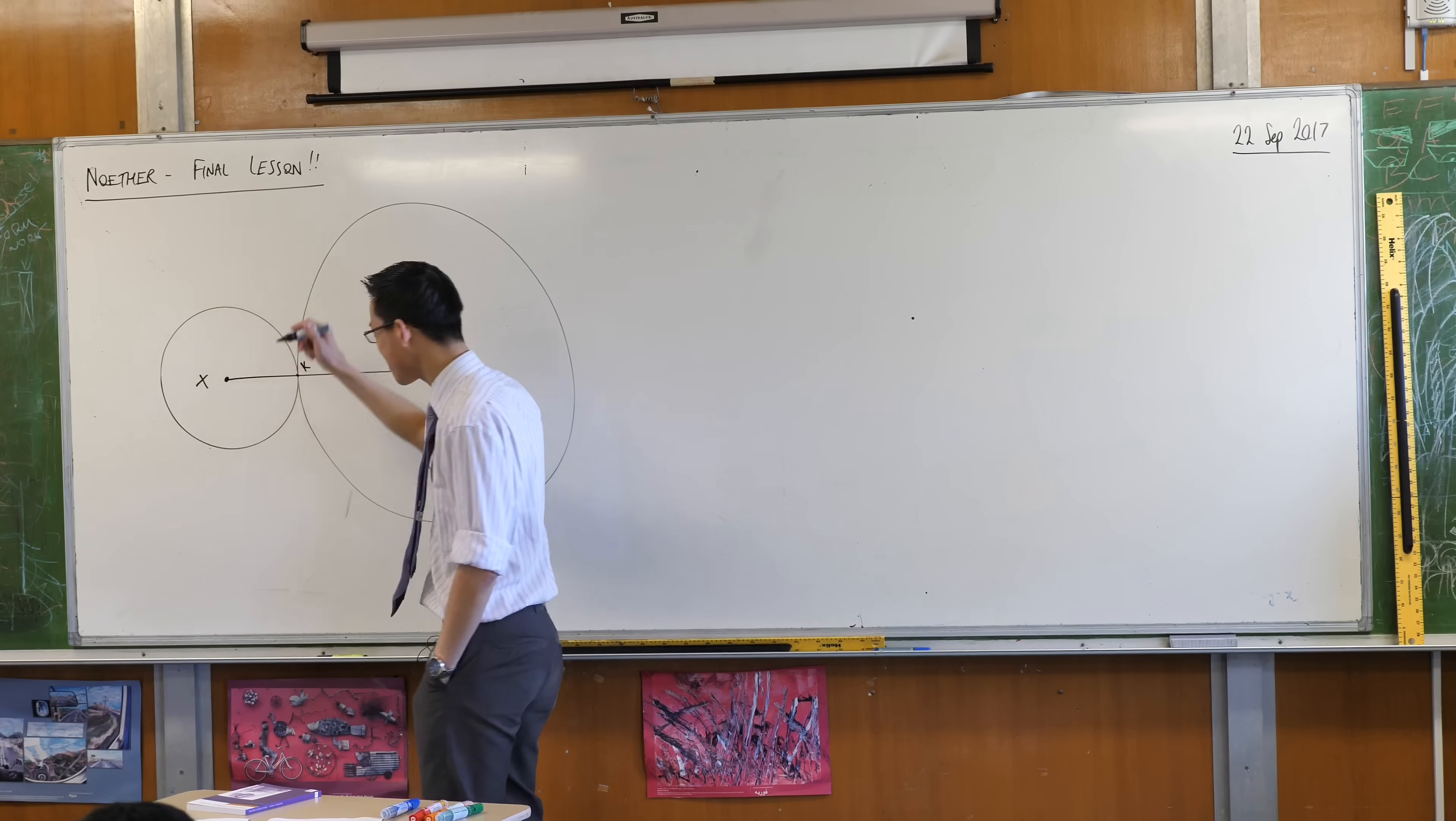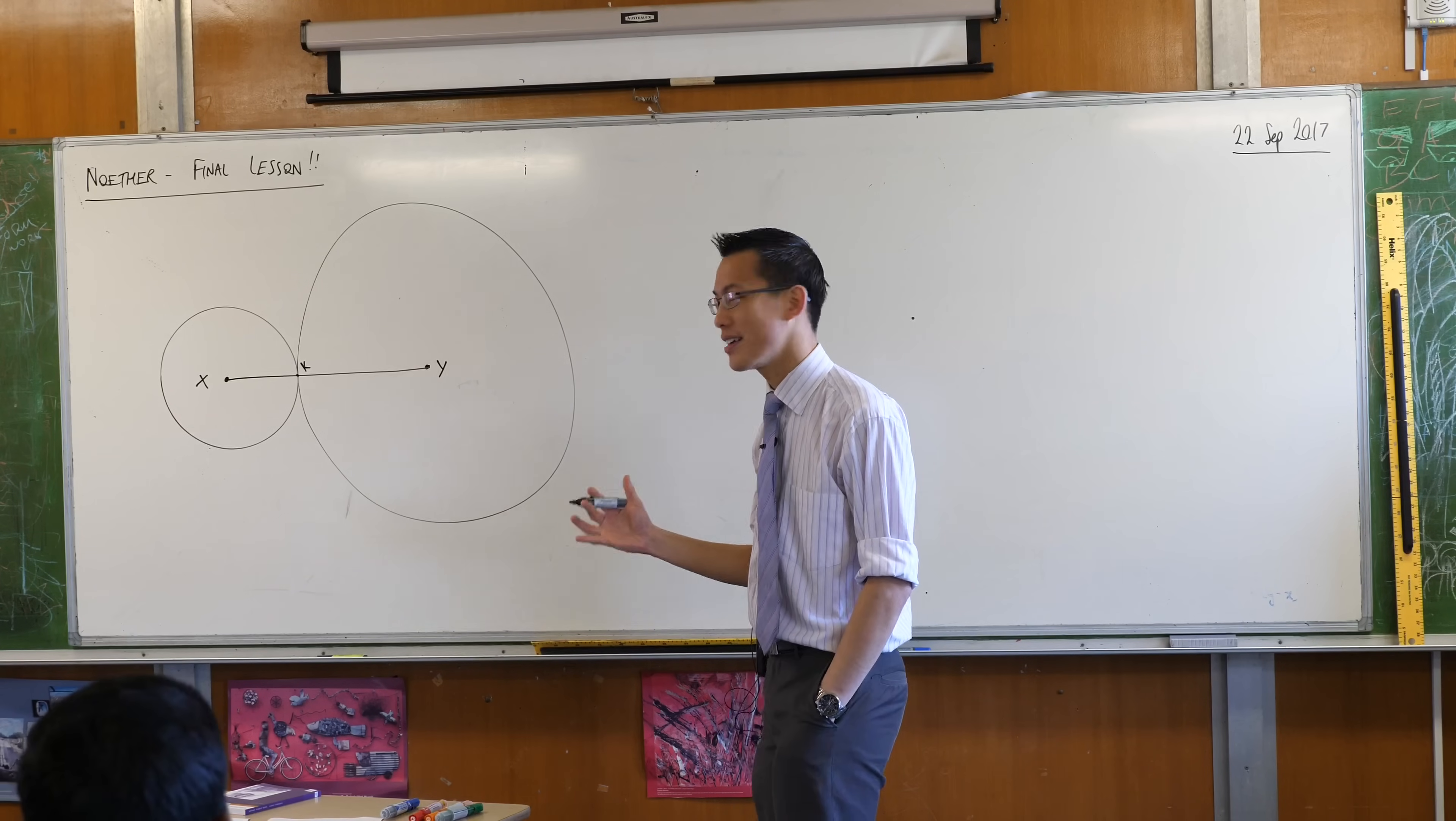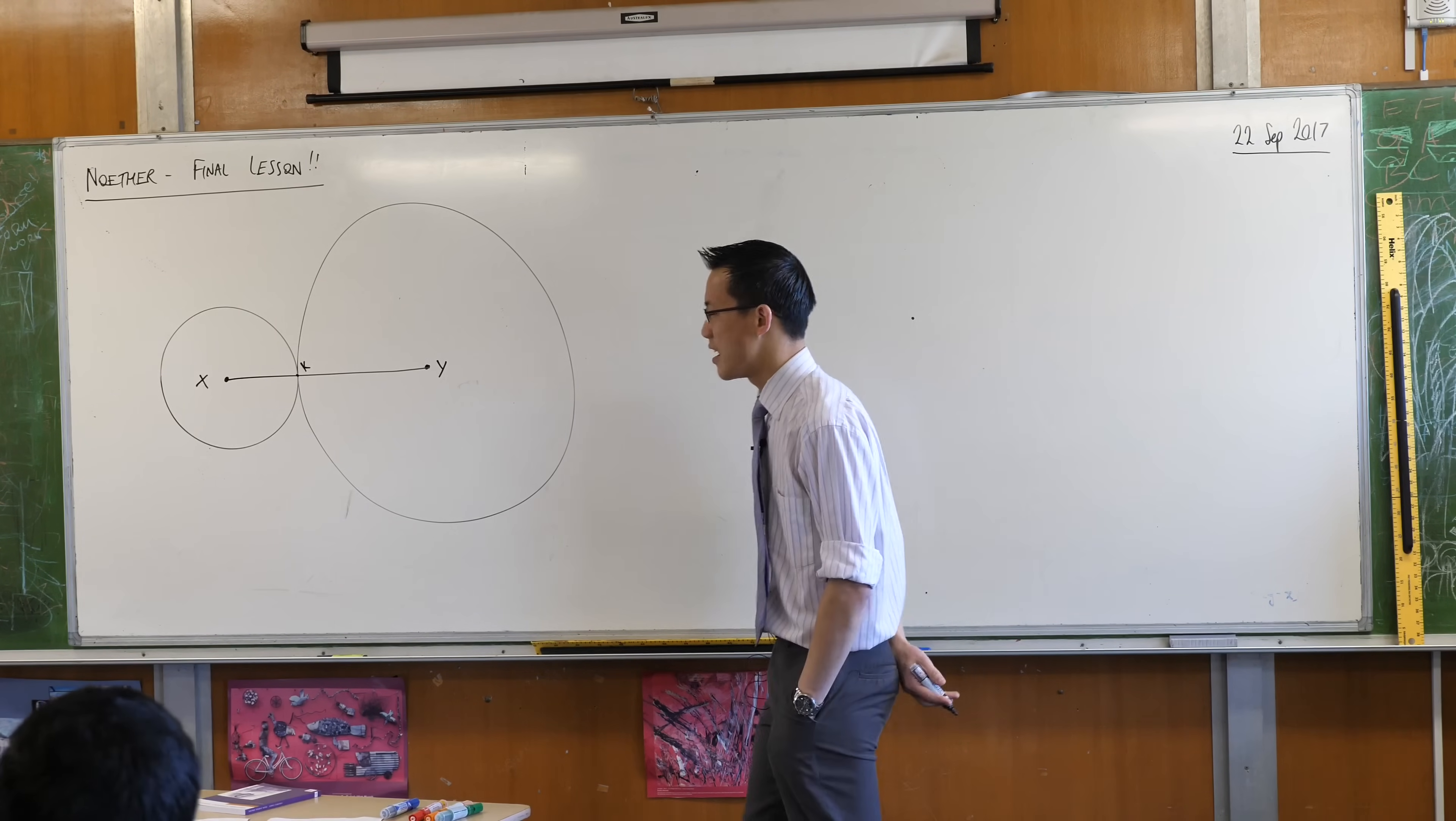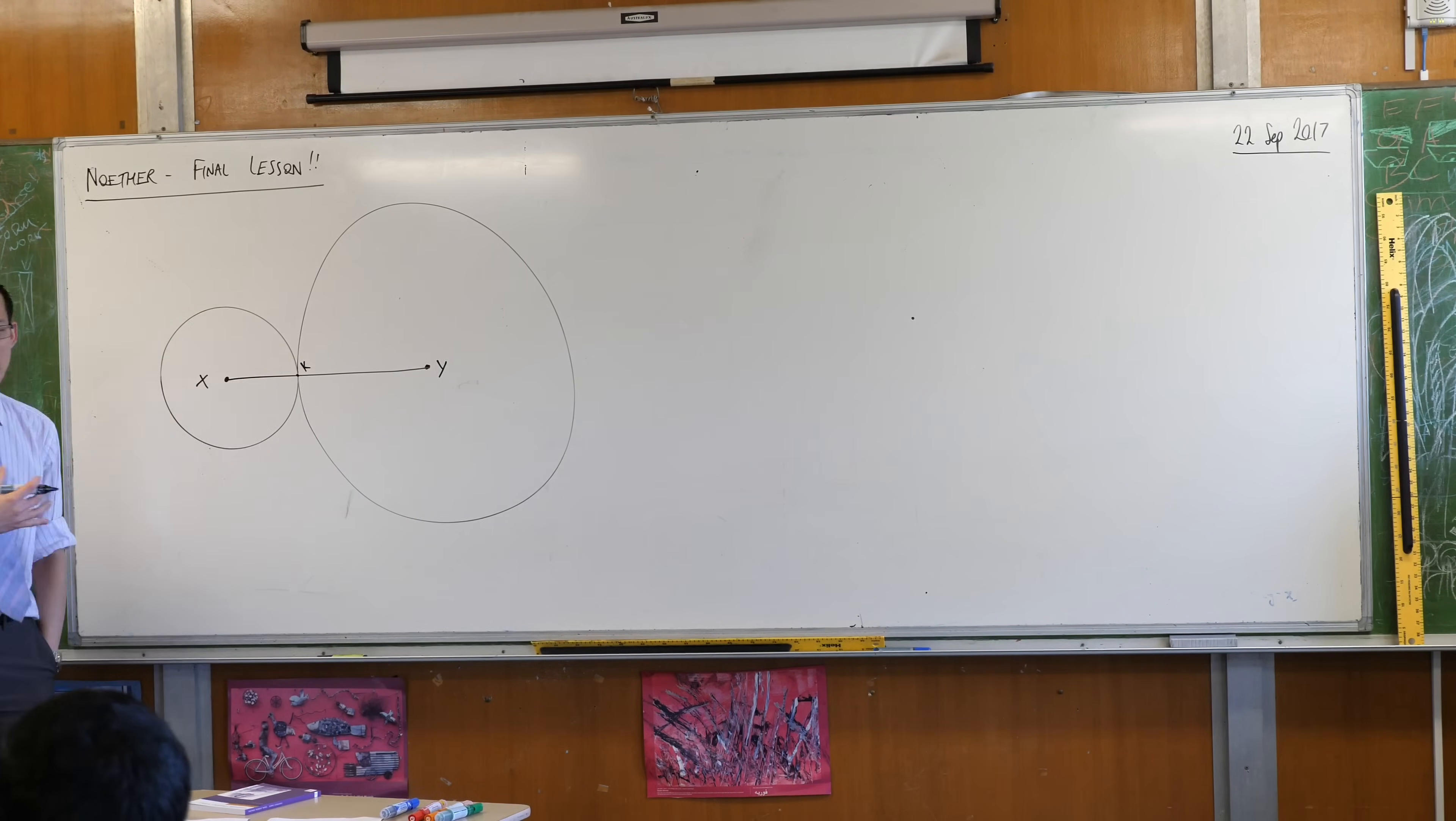Okay, so X, K, Y seems to be a straight line. XKY seems to be a straight line. Now my question to you is if it is a straight line, how can we prove that that is the case?